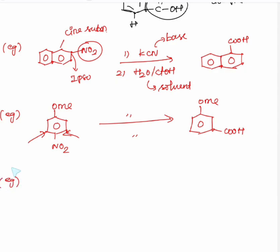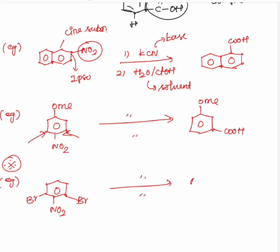Another important example: NO2 here, Br here, Br — same reagent and solvent. This is no reaction, because this is cine substitution and both sides have halogen. Therefore this reaction does not undergo Von Richter rearrangement.